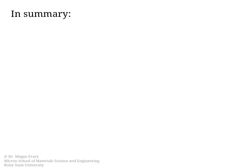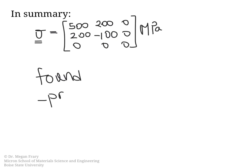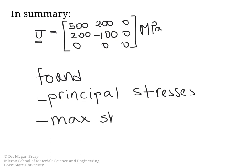That wraps up this example. To summarize: we started with a stress state of sigma 11 = 500 MPa, sigma 22 = negative 100 MPa, and a shear stress of 200 MPa. We found both the principal stress state — the stress values and the angle of rotation needed — and the maximum shear stress state. The original equations and derivations are found in the Mohr's circle explanation video. I hope this example was helpful.